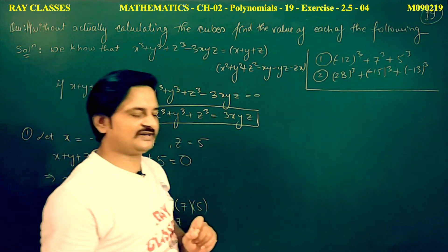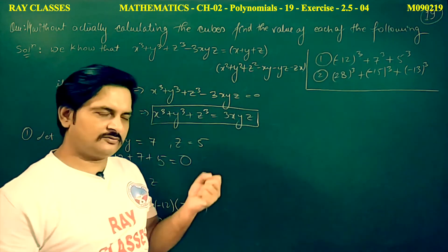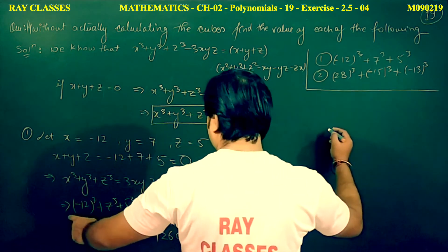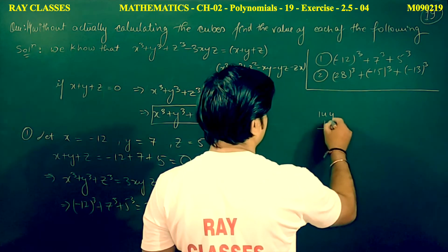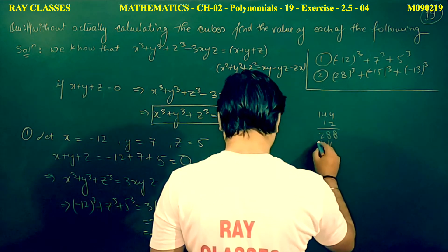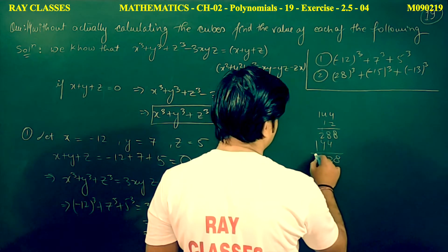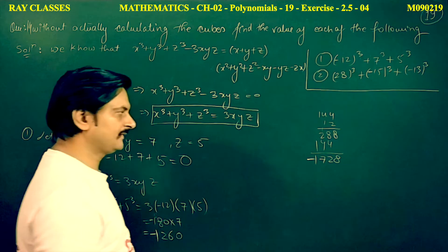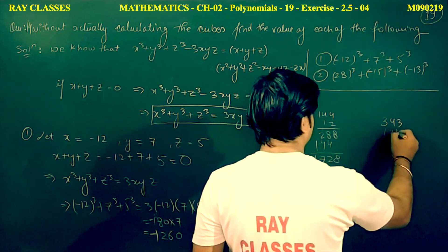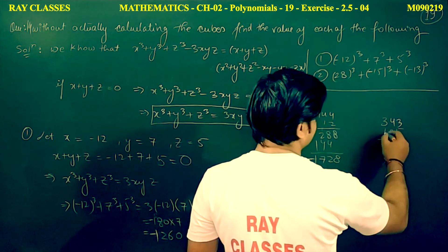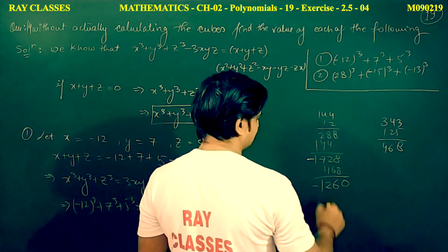We did not calculate the cubes individually — we directly took the product and got the answer. You can cross-check: (minus 12) cubed is minus 1728, 7 cubed is 343, and 5 cubed is 125. Adding these gives minus 1728 plus 343 plus 125 which equals minus 1260. Same number — the formula is verified.